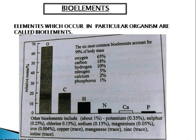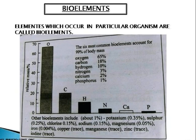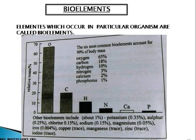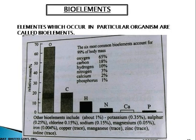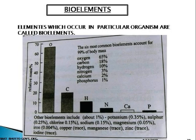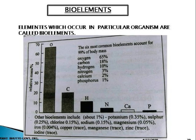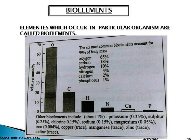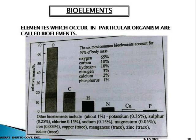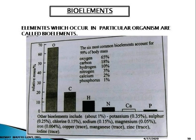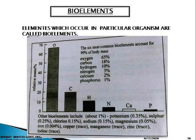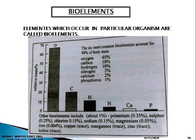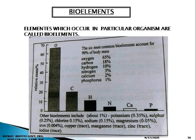Minor bioelements in trace form include: potassium 0.35%, sulfur 0.25%, chlorine 0.15%, sodium 0.15%, magnesium 0.05%, and iron 0.004%, totaling approximately 1%. Trace bioelements include copper, manganese, zinc, and iodine, which are found in living organisms in trace amounts.